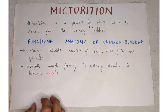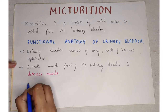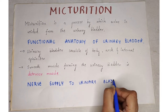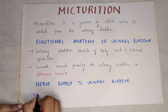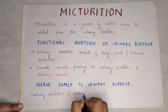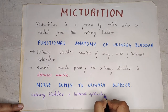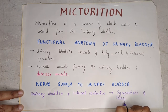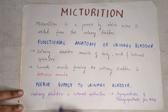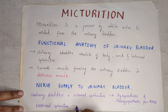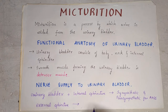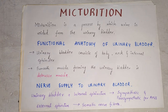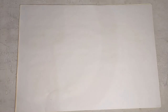To understand micturition, we should first know the nerve supply to the urinary bladder. Mainly, the urinary bladder and the internal sphincter are supplied by the sympathetic and parasympathetic nervous system from the autonomic nervous system, whereas the external sphincter is supplied by somatic nerve fibers, responsible for voluntary control.